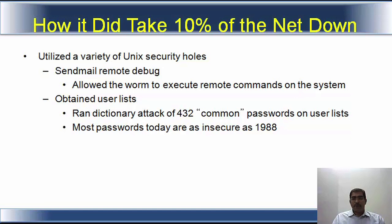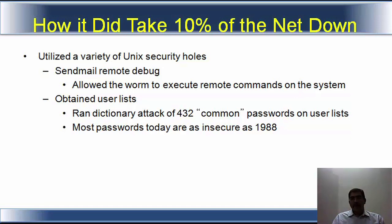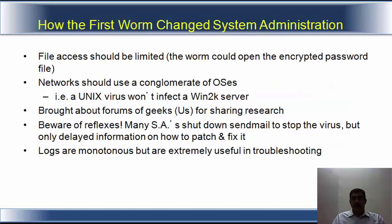The Sendmail remote debug vulnerability was an issue — it allowed the worm to execute remote commands on the system. It obtained user lists and ran a dictionary attack of 432 common passwords on that user list. Even in 1988, the passwords then were as insecure as the passwords that we use today.